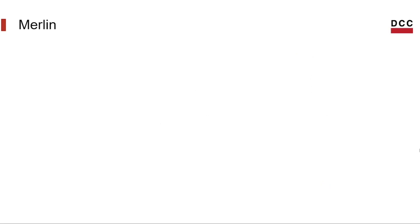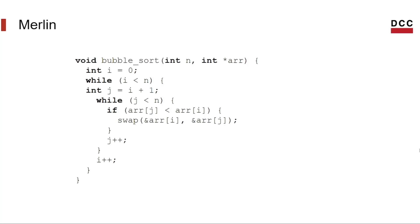Hi, my name is Lucas and as Rafael said before, I'll continue with this presentation from here. So let's see how this process works with a simple example. I will use this bubble sort algorithm implementation. Remember that our goal is to generate a cost model that describes the behavior of this algorithm — we want a cost function that describes the cost of the bubble sort algorithm.